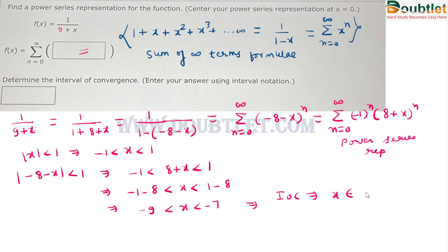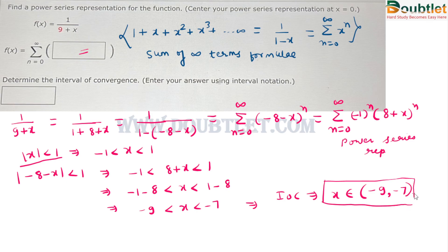So the interval of convergence is x belongs to (minus 9, minus 7). We use an open interval here because the condition is strictly less than, not less than or equal to. We have solved both parts of the question: the power series representation and the interval of convergence. If you would like to ask more such questions, please mention your doubts in the comment box and we will surely make a video on that. Thank you very much.